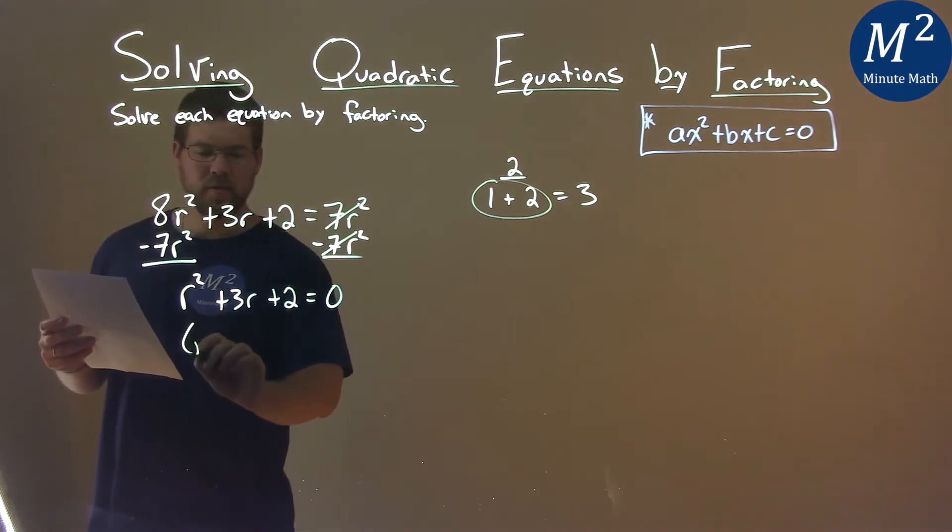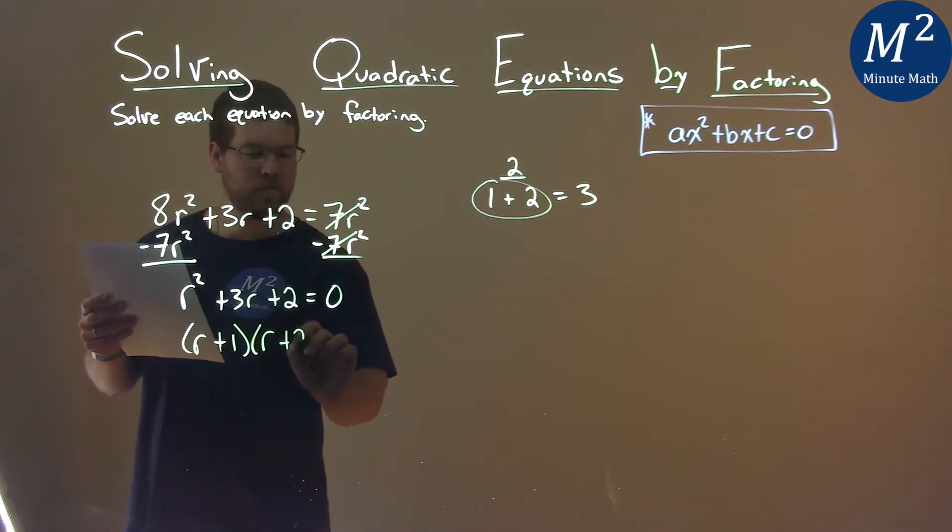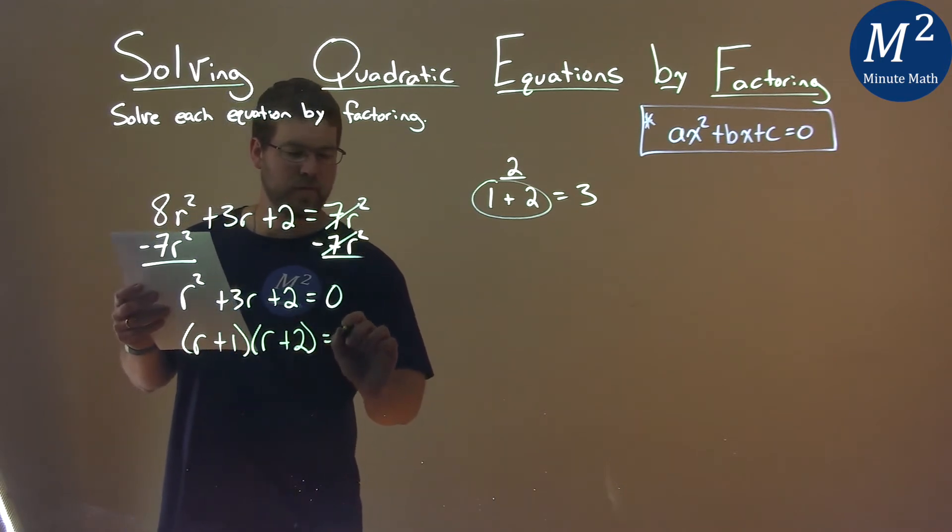So to factor this, we write this as r plus 1, and then r plus 2, in parentheses, each one is equal to 0.